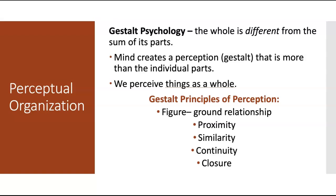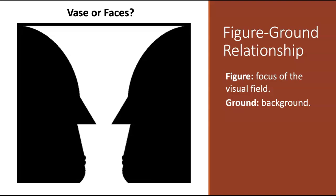And so we're going to be looking at each of these, starting with the figure-ground relationship. So this is the idea that we tend to segment our visual world into figure and ground. The figure is the focus of the visual field, so wherever we're focusing our vision. And the ground is the background.